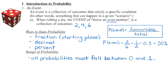When calculating probability, we often represent it as a decimal unless the question specifically asks for a percentage. As a decimal, all probabilities must fall between 0 and 1. A probability of 0 means that it is impossible to get that particular event — such as on a regular six-sided die, the probability of rolling a 7 is 0, since 0 of the six sides have a 7 on them. That is an impossible event.